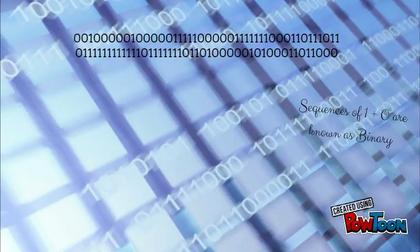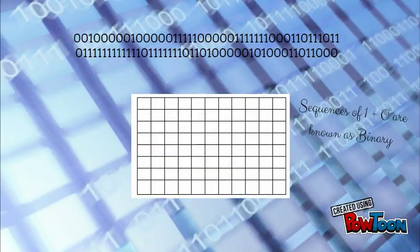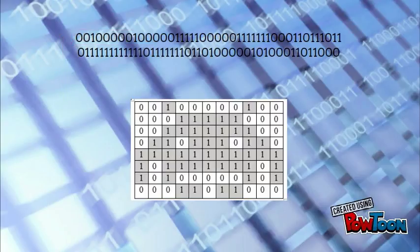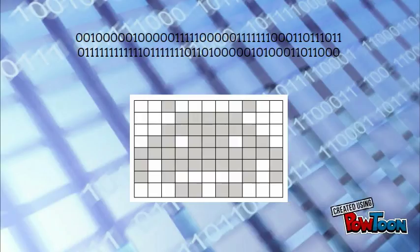The computer screen is split up into pixels, which are represented in grid form — in this case 11 by 8. The computer then places a binary number from the sequence in each square, going from left to right. Each square containing a 1 is colored in, and the square containing a 0 is left blank. This forms an image.